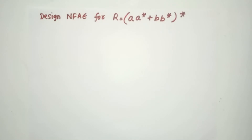I want to give you a better understanding for when the given regular expression is very large. We have seen smaller regular expressions like R = A+B, R = A*+B*, and so on. Now let us take the opportunity to see NFA Epsilon machines for more difficult regular expressions — those having more than one operator — so that you can handle any complex case.